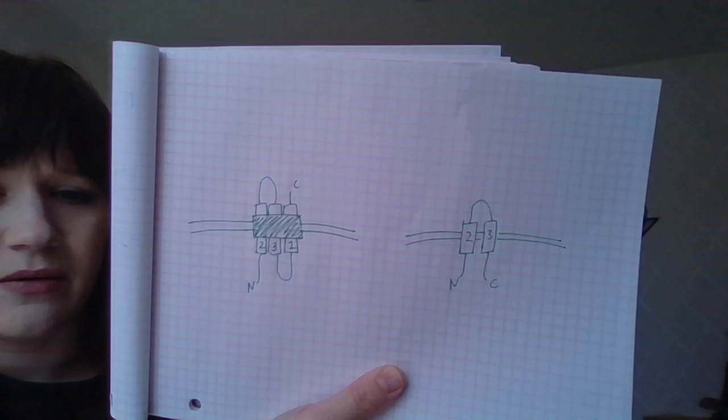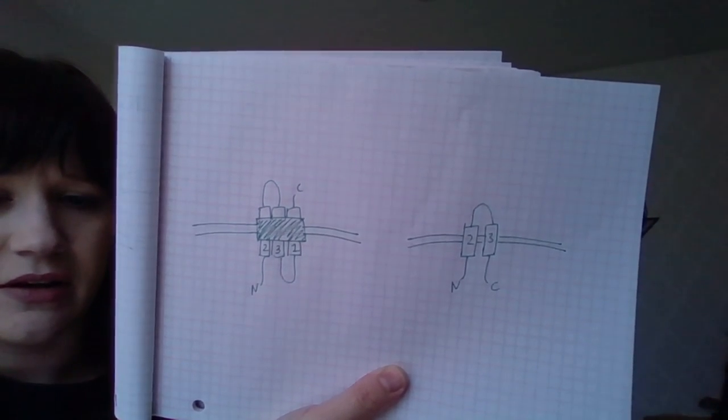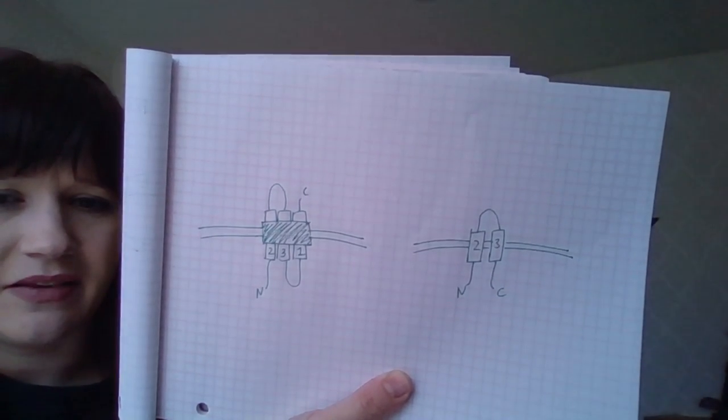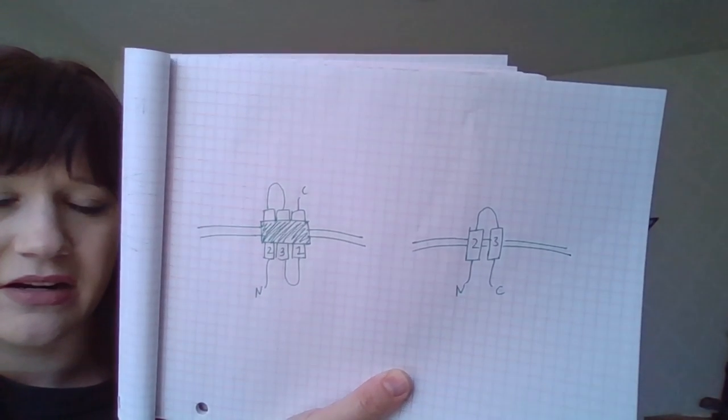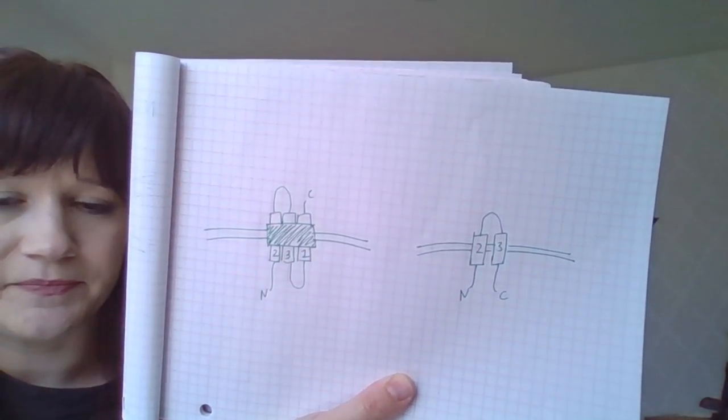So in this case, what we have is the protein is basically flipped, kind of horizontally. So basically what I'm trying to get at with that problem is just that the orientation of that signal peptide plays a role in how that protein gets inserted into the membrane.